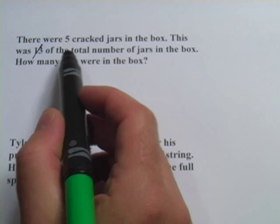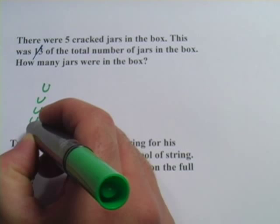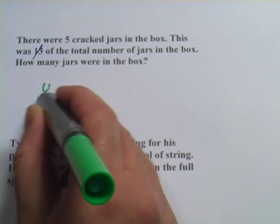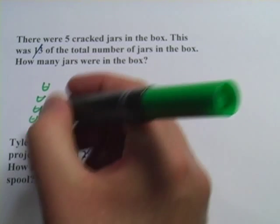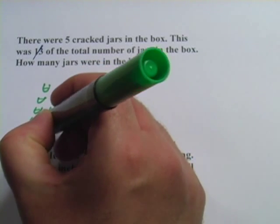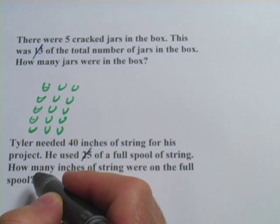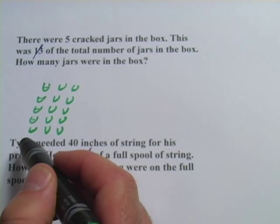So if you think about it, there are five cracked jars—one, two, three, four, five—and these are all cracked. And that's one-third, well then there's two-thirds more just like that. Here's another third, and another third. One-third of the jars are cracked here, and we have a total of three times five, fifteen.